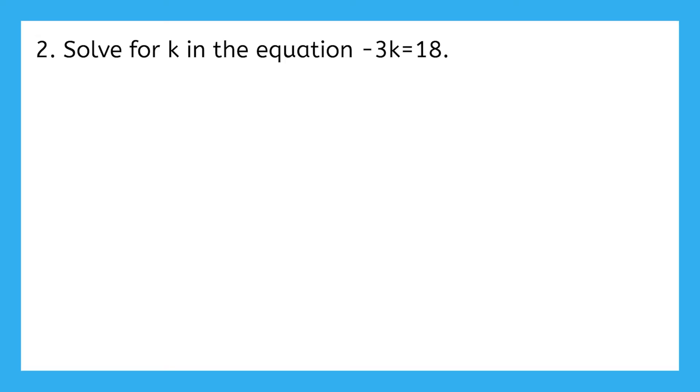This example says to solve for k in the equation negative 3k equals 18. Pause your video here and determine what is happening to k and how can we undo it. Ah, there's no operation sign here, but remember that a coefficient and its variable are being multiplied. So k is being multiplied times negative 3 right now. I can undo that with the inverse, so dividing by negative 3.